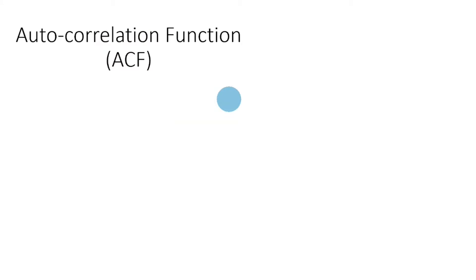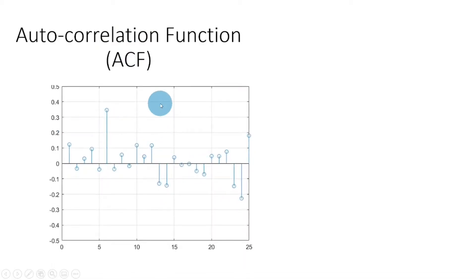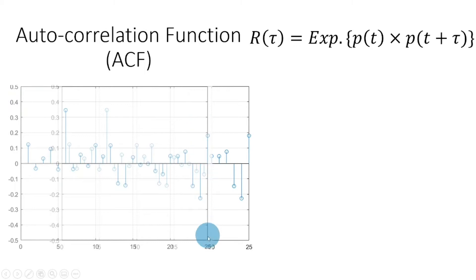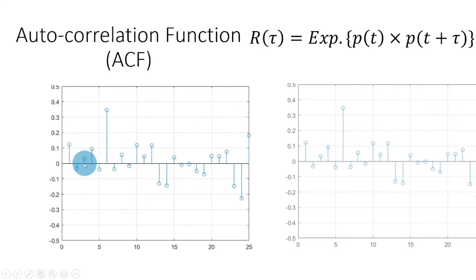For such a random process we cannot take the Fourier transform directly; instead we would need to take the Fourier transform of each realization and then average to find the power spectral density. An alternate means is to find the autocorrelation function. The autocorrelation function, denoted R(tau), is found by multiplying the random process P(t) with a time-shifted version of itself P(t + tau) and taking the expectation at each increment of the shift.